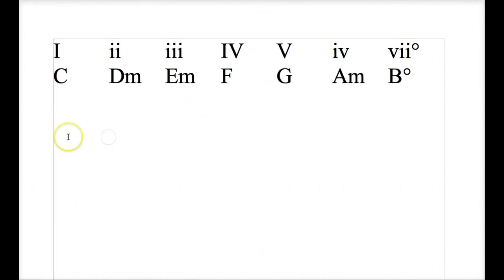So a very common chord progression in popular music is the 1, 4, 5 chord progression usually resolving to a 1 chord and that is going to be, in this case, C, F, G, and back to C.